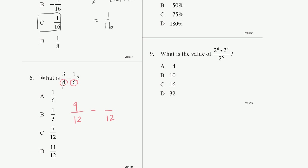3 fourths and 9 twelfths are the exact same fraction. To go from 3 fourths to 9 twelfths, you multiply the numerator and denominator by 3. Now for 1 sixth: 6 goes into 12 two times, so multiply the numerator by 2 to get 2 twelfths. Now that we have a common denominator, it becomes a simple problem: 9 twelfths minus 2 twelfths equals 7 over 12. And that is choice C.